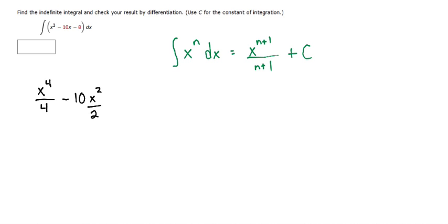The next term, the minus 8, there is no variable there, so the rule is that we just add an x to it, so minus 8x, and we can put the plus C at the end.